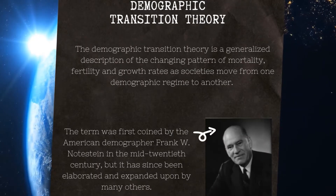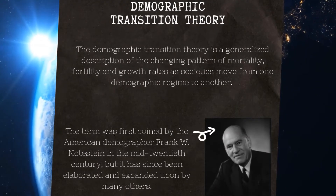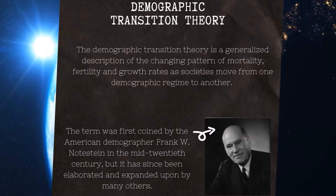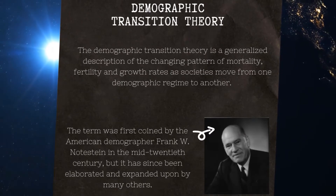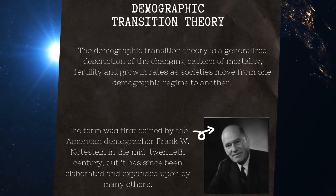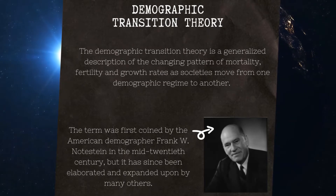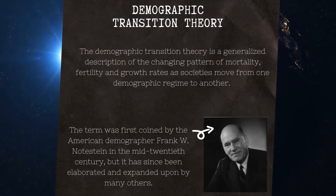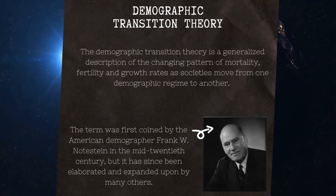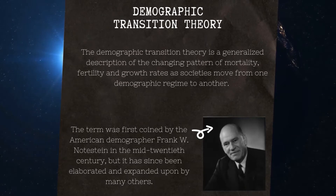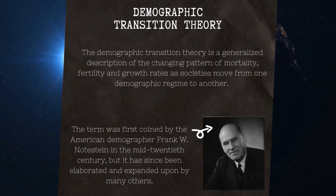The demographic transition theory is used to describe and explain the movement of birth rates, death rates, and population growth. The term was first coined by the American demographer Frank W. Notestein in the mid-20th century, which suggests that every country passes through different stages of population growth.